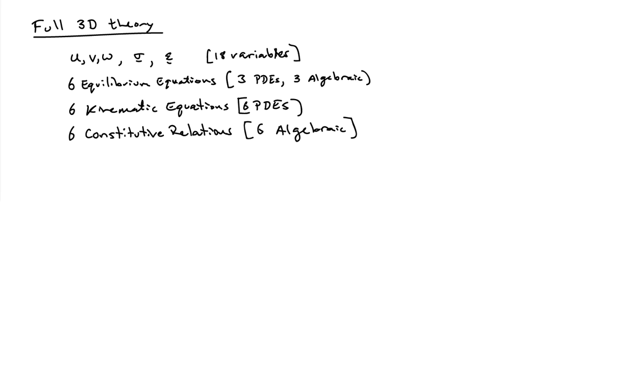We now have a full three-dimensional theory for the mechanical behavior of elastic solids. It involves 18 variables: three displacements, nine stress quantities, and six strain quantities.